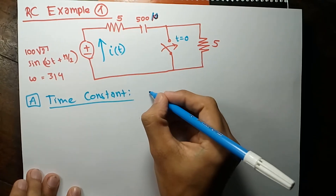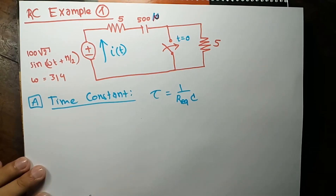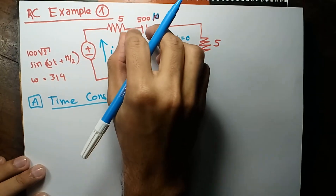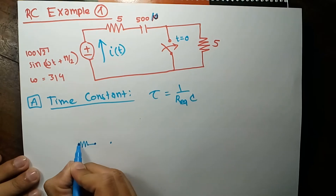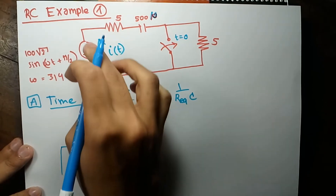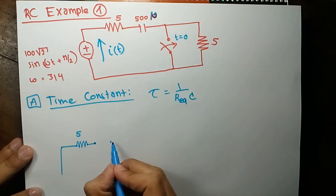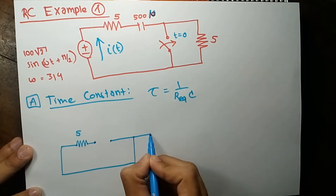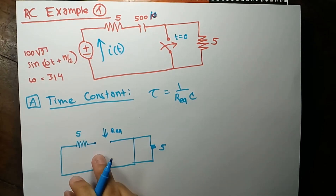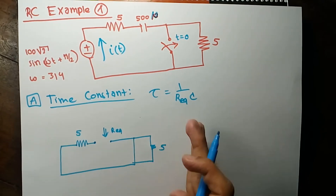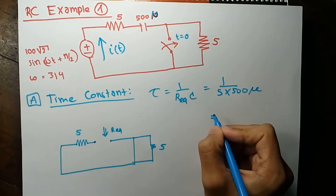The first step is to find the time constant. For an RC circuit, tau equals one over R_equivalent times C. To find R_equivalent, we look from the capacitor terminals. The independent source is turned off and shorted out after t equals zero. From the capacitor terminal, we see a 5-ohm resistance, and the other 5-ohm is shorted, leaving only 5 ohms as R_equivalent.